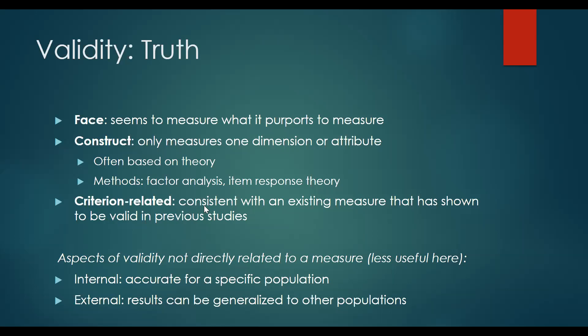Construct validity has to do with whether a question measures just one dimension or attribute. You only want to measure one thing at a time — you don't want to lump a bunch of things together. When looking for evidence in a paper, you might look at information about theory, and sometimes factor analysis or item response theory are the statistical approaches used to establish construct validity. For example, quality of life has many different constructs within it. When measuring quality of life, you might focus on just health-related quality of life, making sure questions get at the health-related aspects and not things like life satisfaction or unrelated topics.